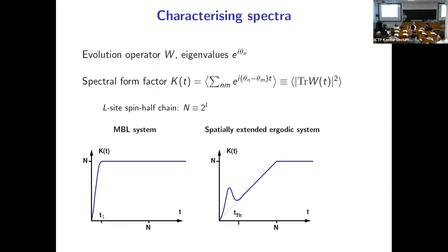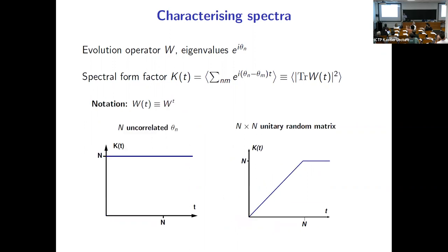On why the random matrix spectral form factor is linear in T at short times: that's because of level repulsion, which says that the short-wavelength components in the spectral density fluctuate much less than if there weren't any correlations between the levels.